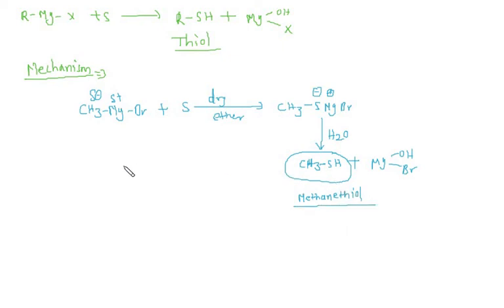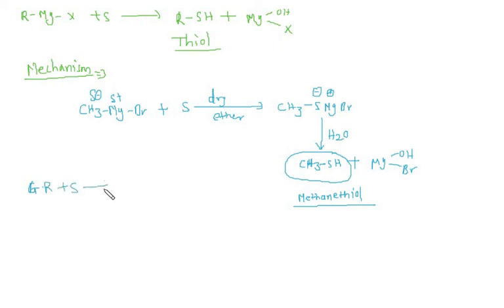The product is methyl thiol. So the purpose of this reaction: whenever a Grignard reagent reacts with sulphur, you will always get a thiol.